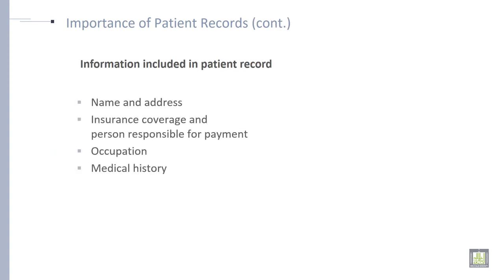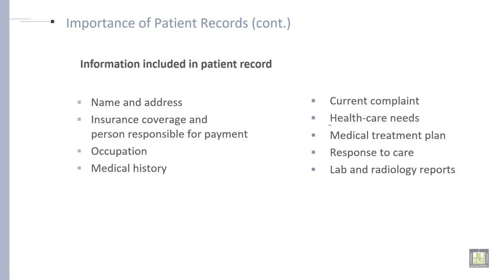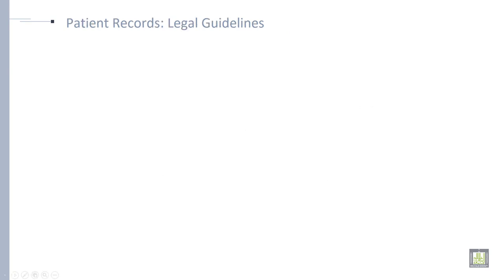Information included in the patient record: name, address, insurance coverage, occupation and medical history, current complaint, health care needs, medical treatment, response to care, and lab and radiology reports.